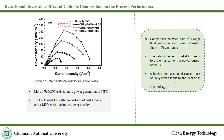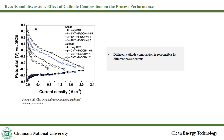Regarding the effect of cathode composition on process performance, more lepidocrosite leads to more power generation and the composition of 1:2 generated maximum power density. A comparison of orange 2 degradation and power density shows that trends are different in both processes, because more lepidocrosite catalyzes more oxygen to generate power but also leads to the decomposition of hydrogen peroxide into water, decreasing the orange 2 degradation rate. Figure 5B shows that the anode and cathode potentials are different for different compositions, making the different cathode compositions responsible for different power outputs.